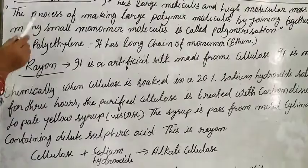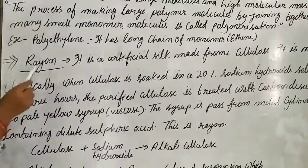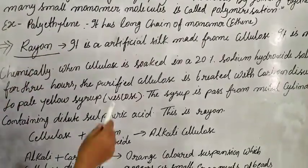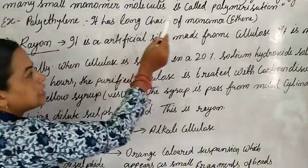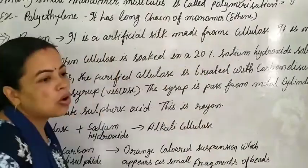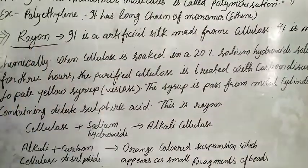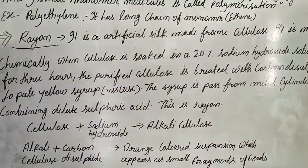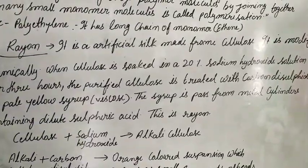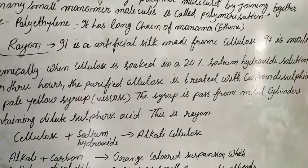An example of polymerization is polythene. It has a long chain of monomers. The long chain contains ethylene. Ethylene is the most important part of polymerization.